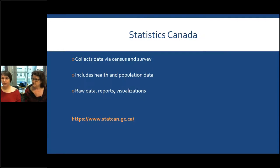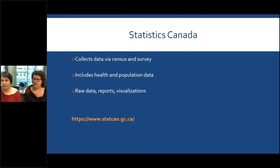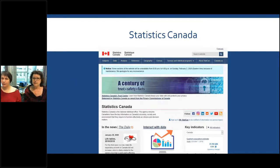Another resource is Statistics Canada — this is the place to go for fast and free resources. They collect data via the census and surveys, including health and population data. They provide raw data, reports, and also visualizations. The URL is statcan.gc.ca. They have recently changed their webpage, so we're still becoming familiar with it a bit as well.